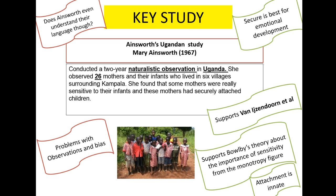This research suggests that attachment — especially secure attachment — is universal, and if it's universal, that means it's actually innate. So that kind of supports Bowlby's original theory about sensitivity from the monotropy figure. You have to be sensitive to your offspring.